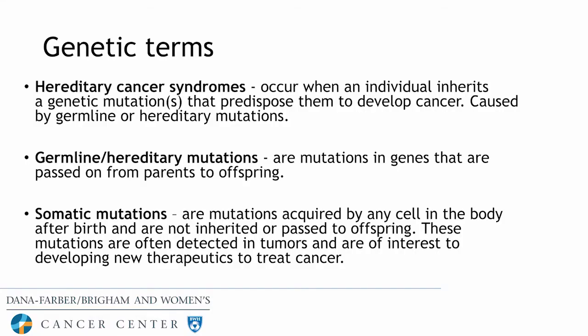I thought it would be important to start by defining some basic genetic terms. Hereditary cancer syndromes occur when an individual inherits a genetic mutation that predisposes them to develop cancer. This can be caused by a germline or hereditary mutation — mutations in genes that are passed on from parents to offspring. This is in contrast to somatic mutations, which are acquired by any cell in the body after birth and are not inherited or passed to offspring. These mutations are often detected in tumors and are an area of interest for developing new therapeutics to treat cancer.